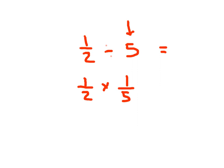And we know how to do these types of problems, where we just multiply the numerator — 1 times 1, which is 1 — and 2 times 5, which is 10. We multiply those denominators as well. So 1 half divided by 5 is 1 tenth.